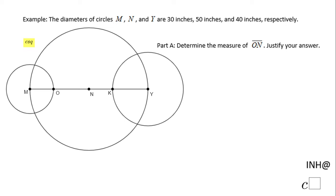Welcome or welcome back, I Need Help at C Square. In this example we have three circles: circle M that has the center right here at M, circle N that has the center right here at N, and circle Y that has the center right here at Y. M has a diameter of 30, N 50, and Y 40 inches.